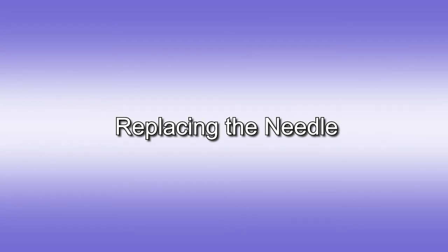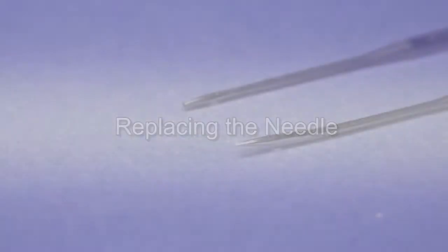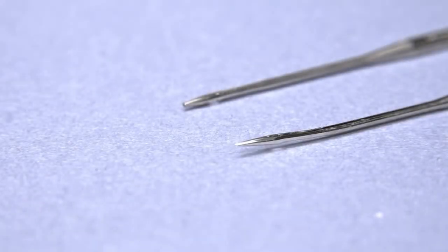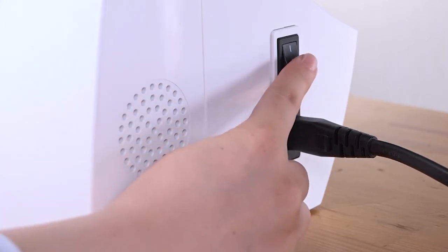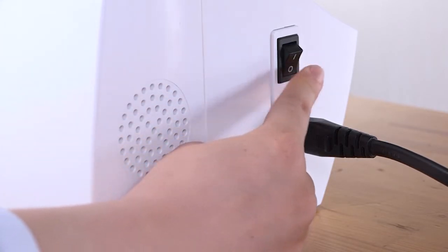Replacing the Needle. Check the needle frequently to ensure that its tip is not rough or blunt. Replace it with the new needle if it is dull or bent. Be sure to turn off the machine and disconnect it from the power supply.